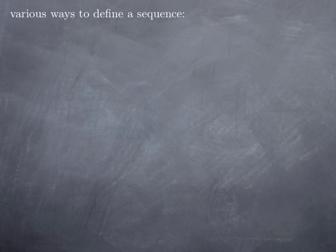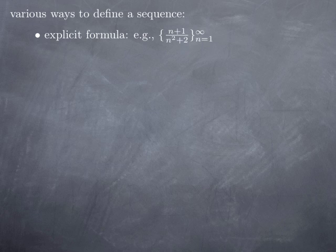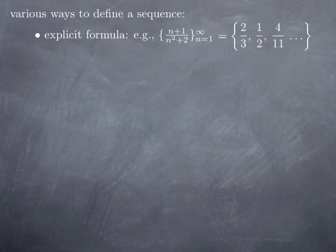There are various ways to define a sequence. One is to give an explicit formula. For instance, we can look at the sequence (n+1)/(n²+2) where n starts at 1 and takes all natural values. The first term is when n equals 1: you get (1+1)/(1²+2) = 2/3. When n is 2, you get 3/6 = 1/2. When n is 3, you get 4/11. And you keep going this way.